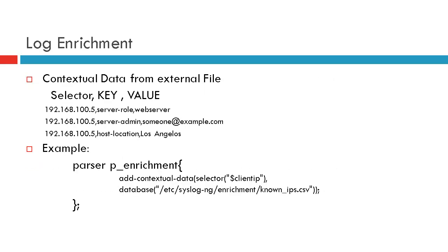Before jumping into the lab, let's take a quick overview of log enrichment. In order to do log enrichment with syslog-ng there are two components: one is the external file that has the contextual data for enrichment, and the second is the parser using the add_contextual_data function. The external file format is selector, key, value. For example, the selector is the IP address, the keys are server role, server admin, and host location, and the values are 'web server', 'someone@example.com', and 'Los Angeles'.